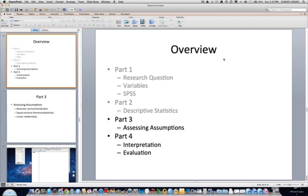In part two, we used SPSS to generate some univariate and bivariate descriptive statistics. In part three, we're going to look at assessing assumptions, followed by interpreting and evaluating the statistical outcomes in part four.